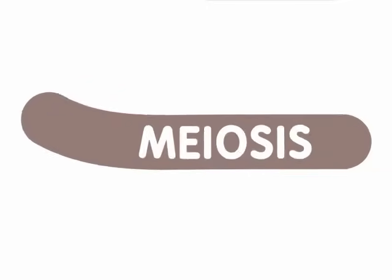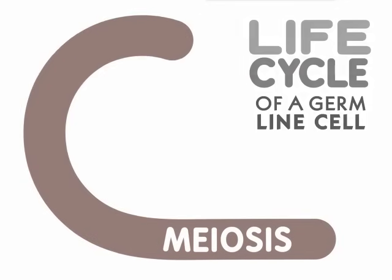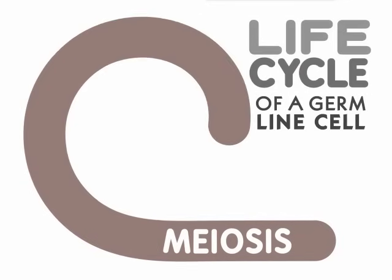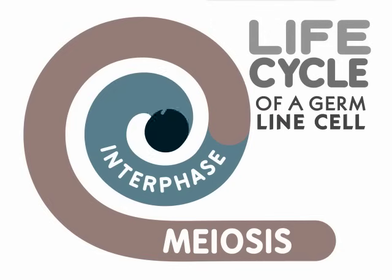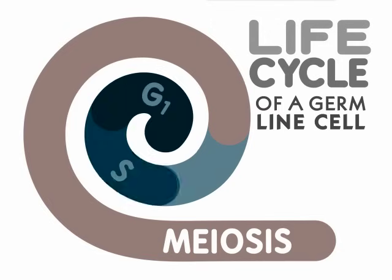Meiosis is just one step in the life cycle of a germline cell. Similar to mitosis, the cells also pass through the interphase G1, S, and G2 stages before they enter meiosis.